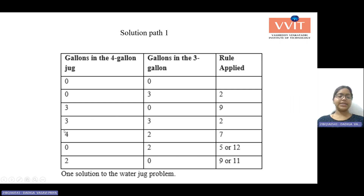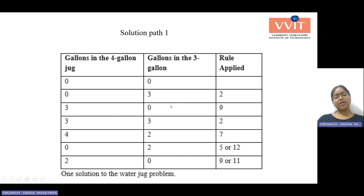Next, I empty the 4-liter jug completely, giving us 0 comma 2, done using rule 5 or rule 12. Now the 2 liters of water is poured into the 4-liter jug. Our goal state is to have 2 liters of water in the 4-liter jug. So we get 2 comma 0, done using rule 9 and rule 11. This is one solution path to solve the water jug problem.